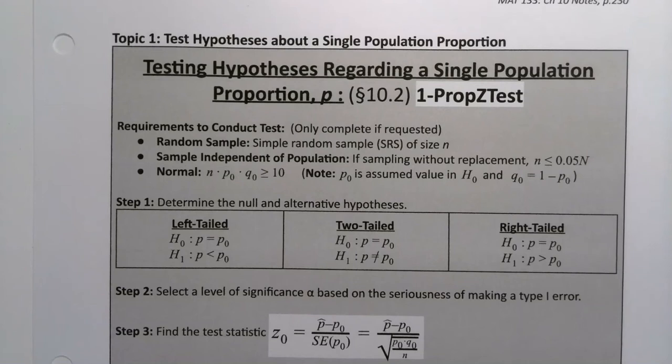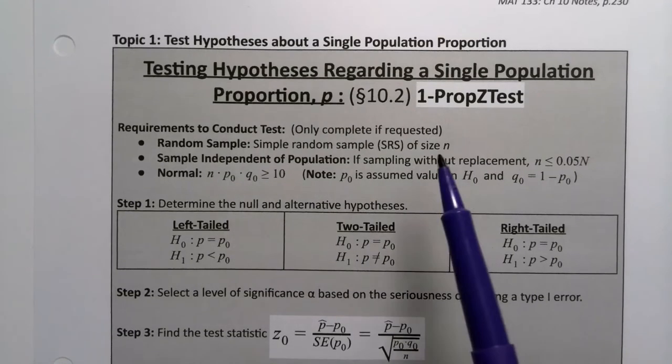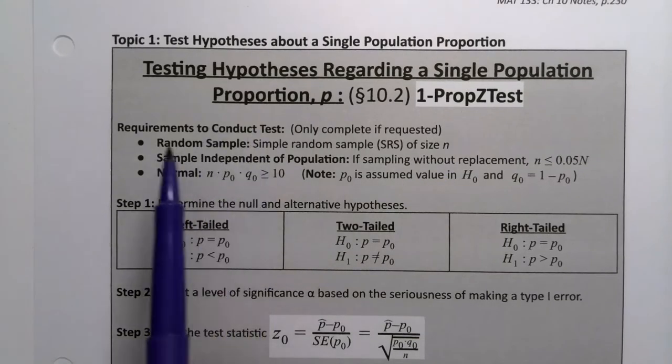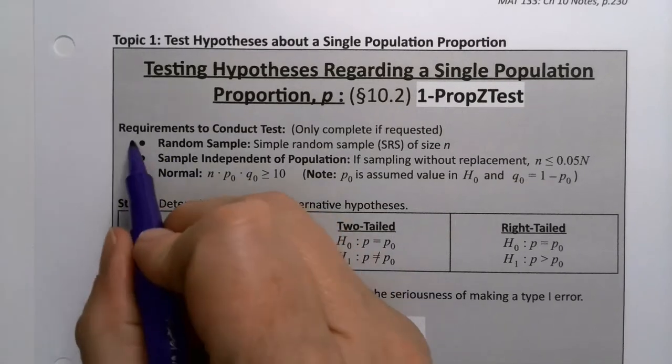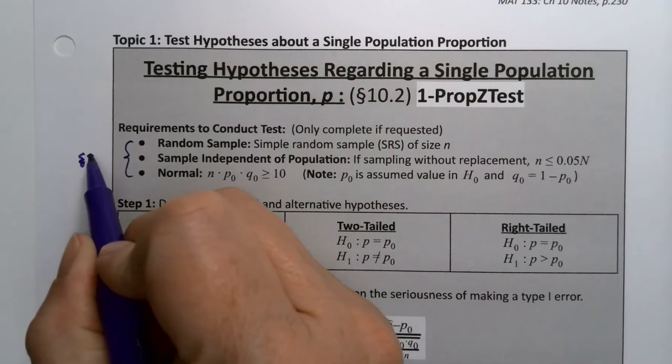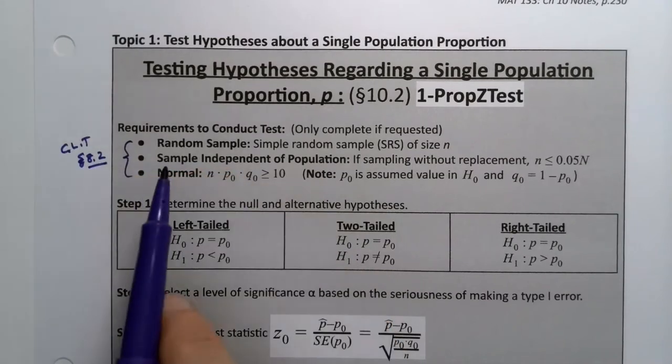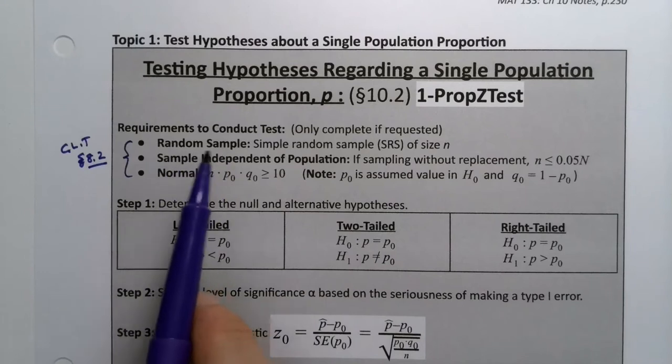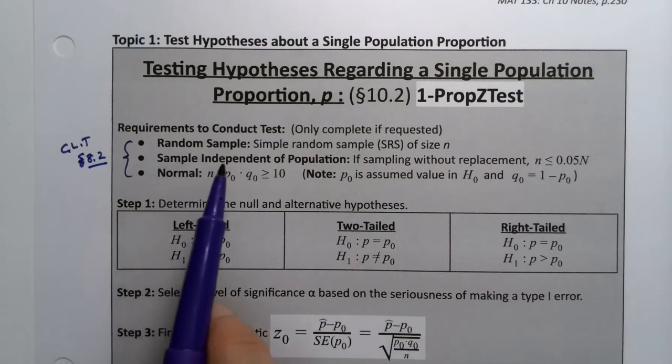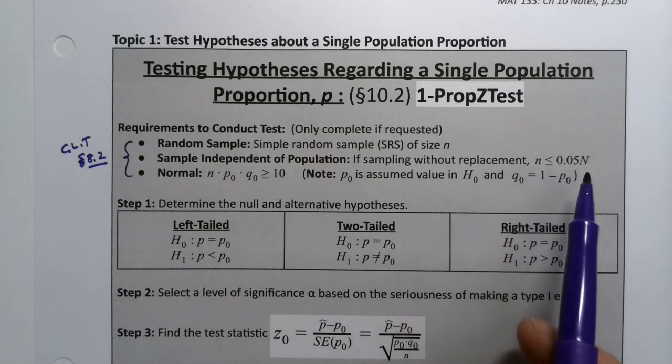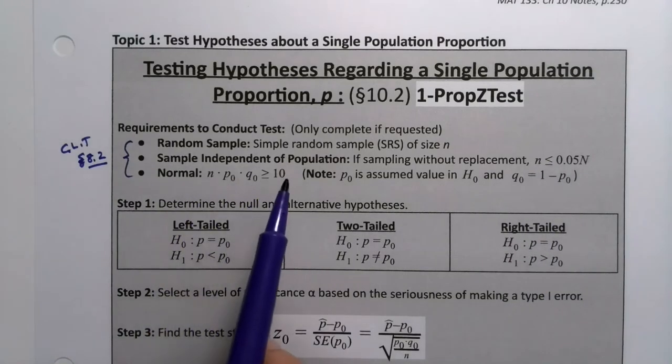All right. So you can see when you look at these hypothesis tests, or this hypothesis test, that it has a whole bunch of things that are familiar to you. So first of all, there's the requirements to conduct the test. And then that looks familiar. That's because it should. We learned about those in section 8.2. That was the central limit theorem for proportions. Remember the central limit theorem? So you need your sample to be random. You need your sample independent of the population, which means that the sample size is less than 5% of the population size.